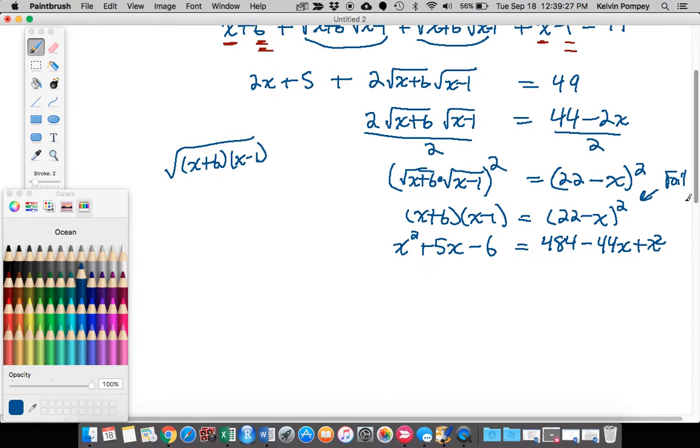Now that I have that, I see it looks like a quadratic equation because I have an x² here and an x² here. But notice if I subtract x² from both sides, these two x² terms are going to cancel. So this is actually a linear equation: 5x minus 6 equals 484 minus 44x. I'm going to add 44x to both sides, which gives me 49x, and I'm going to also add 6 to both sides, giving me 490. I'll divide both sides by 49 and I get x equals 10.